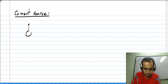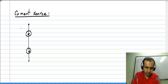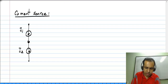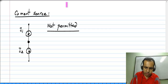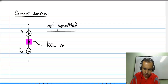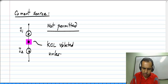Now, we can imagine connecting current sources like this, and let us say they have values I1 and I2. We will immediately notice that this connection is not permitted, because Kirchhoff's current law is violated at this node, unless I2 happens to be exactly equal to I1.